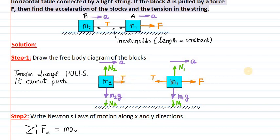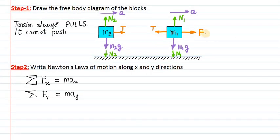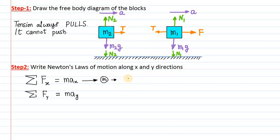Our free body diagram is complete. Now we go to step number 2: write down Newton's law of motion, F equals Ma, along the X direction and Y direction separately. The total force — sigma means summation — of all forces acting in the X direction must equal the mass of the body multiplied by its acceleration in the X direction. Applying this for block M1: force F acts in the positive X direction, and tension T acts in the negative X direction.